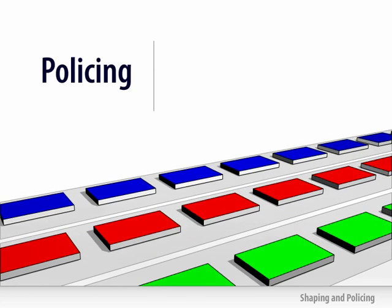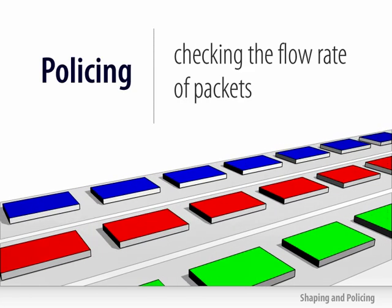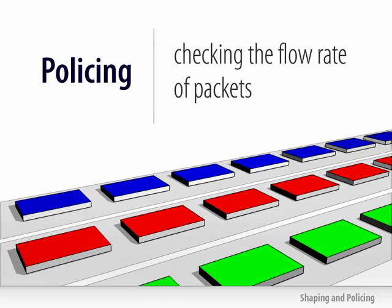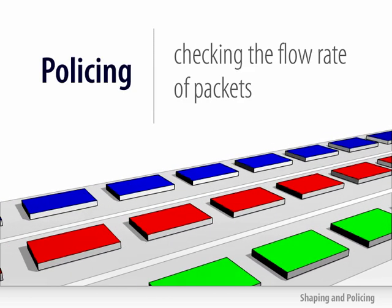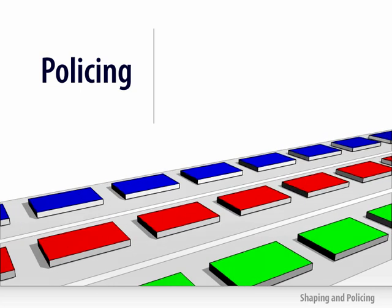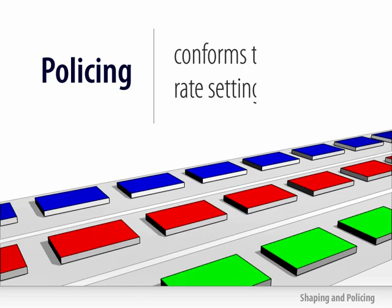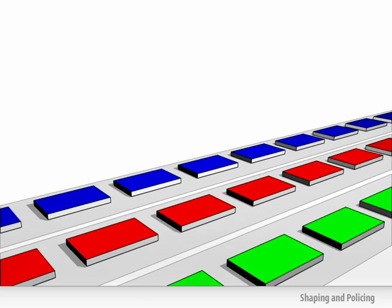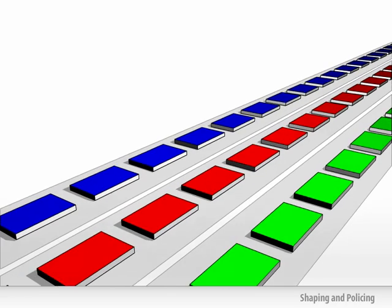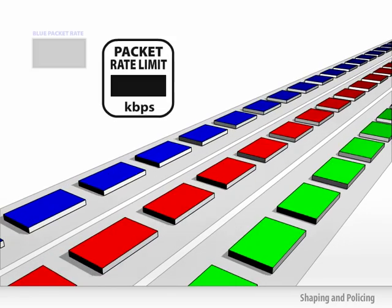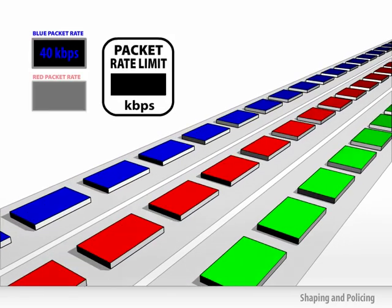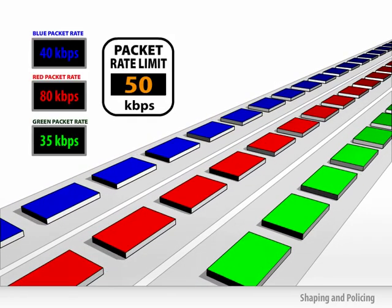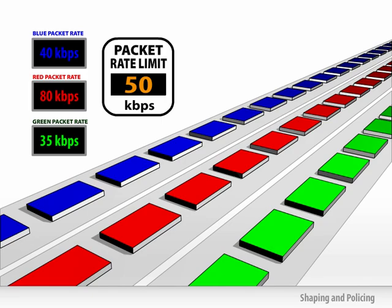Policing involves checking the flow rate of packets for a particular classification of flows to determine if it conforms to the specified rate settings. For example, a packet flow for a certain source could be set to not exceed 50 kilobits per second.